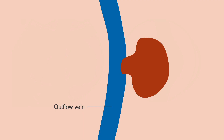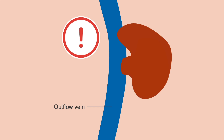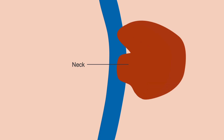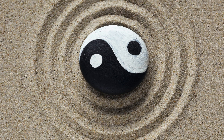Pseudoaneurysms are dangerous when they grow large enough to compress the fistula, as this can lead to stenosis and occlusion. Another danger is when the neck of the pseudoaneurysm — the connection to the outflow vein — widens to help the pseudoaneurysm expand, as this can cause increased compression of the outflow vessel. On color ultrasound, pseudoaneurysms have a classic yin-yang sign, due to the swirling blood flow within the collection.